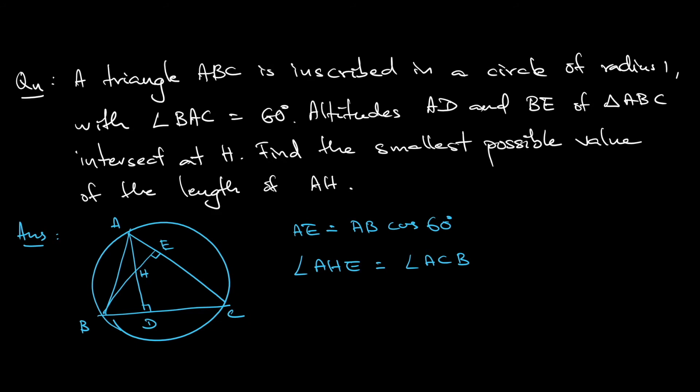And that means now I have AH. I can write it as AE divided by sine of angle AHE. So this is in triangle AHE. AH, the hypotenuse, is equal to AE divided by sine of angle AHE. But remember AE is AB cosine 60. And angle AHE is the same as angle ACB. So substitute that in.